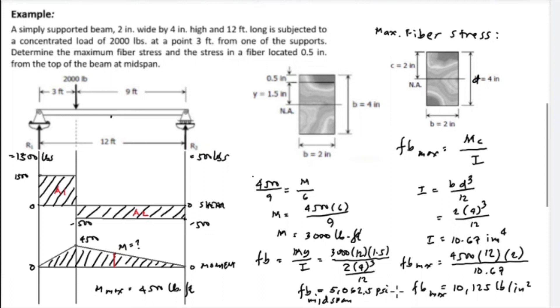The maximum bending stress is equal to 10,125 pounds per square inch (PSI), and the bending stress at the fiber located 0.5 inch from the top at mid-span is 5,062.5 PSI.